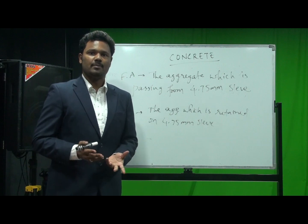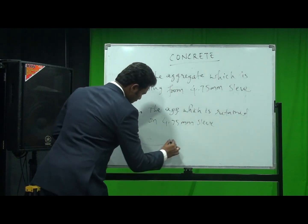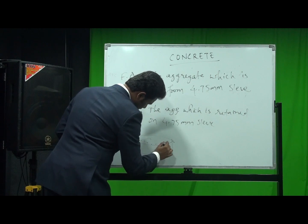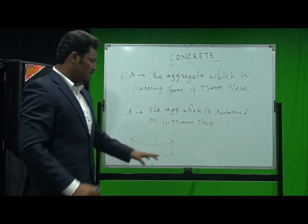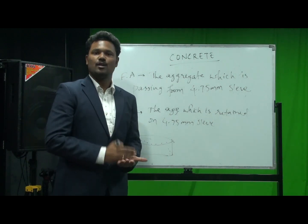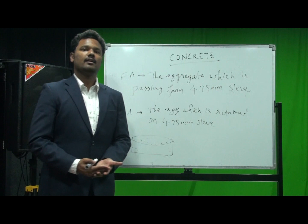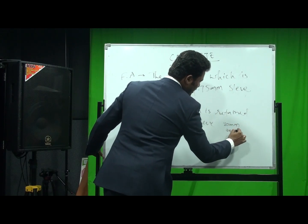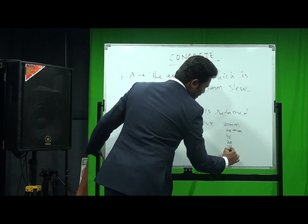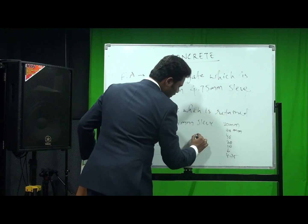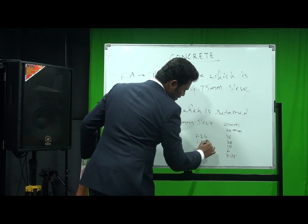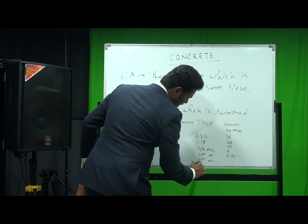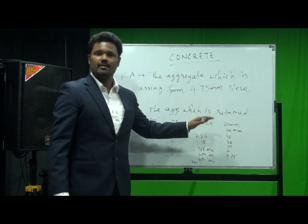What is this 4.75 mm sieve? There are different sizes of sieves in our lab. In general, there are many sieves like 80 mm, 60 mm, 40, 20, 10, 6, 4.75, 2.36, 1.18, 750 microns, 600 microns, 450 microns, 300 microns — likewise there are many sieves.